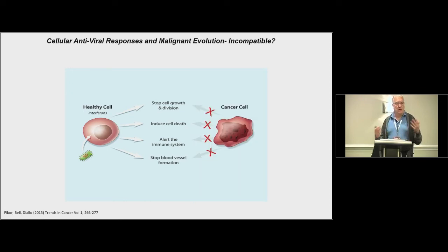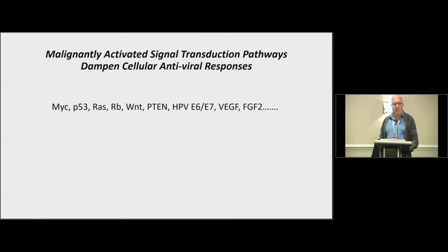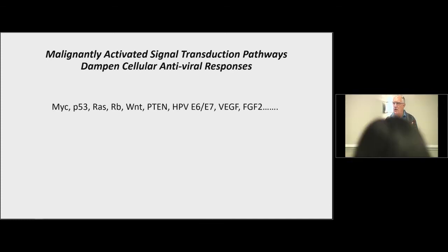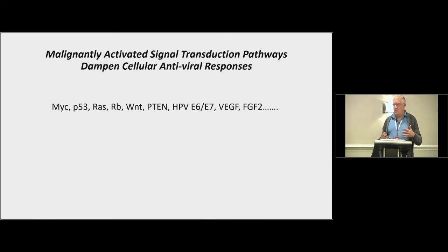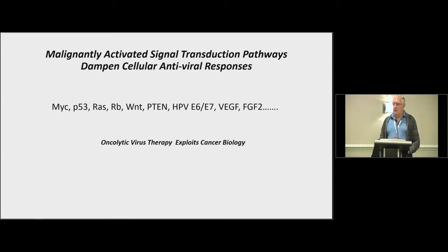A cancer cell is the opposite — it doesn't care about the body, it wants to grow forever, it's immortalized and never wants to commit suicide. As a result, the same programs you would normally use to fight a virus infection at the single-cell level are often eliminated in a cancer cell. This is well-documented: players familiar in the tumorigenesis field — MYC, P53, RB, RAS — are now known to interact with the interferon pathway. MYC over-expression leads to down-regulation of the interferon response. So every cancer cell is more sensitive to virus infection than a normal cell, and that's what we can exploit with oncolytic viruses.